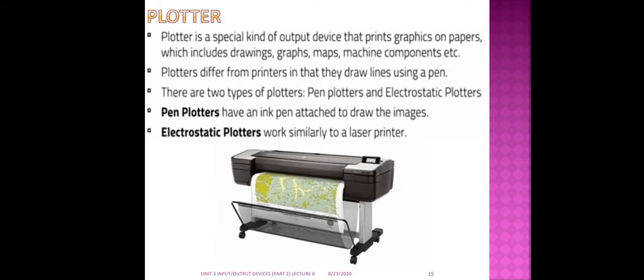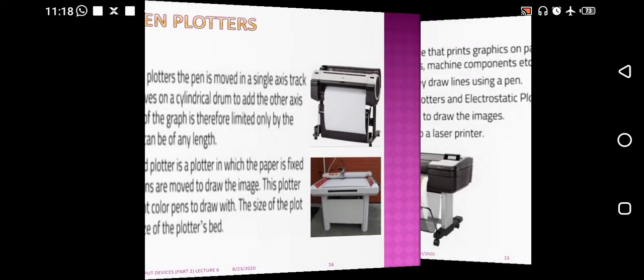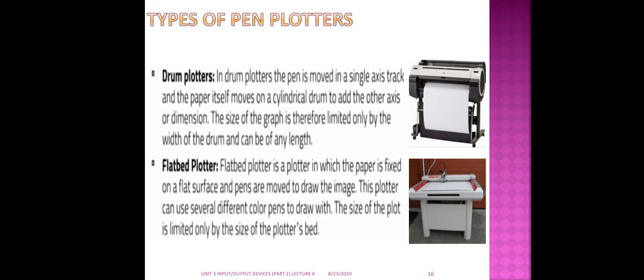Here you see the difference between impact and non-impact printers on the screen. We also have the plotter, which is a special kind of output device. The difference between a plotter and a printer is that a plotter gives graphics on paper — drawings, graphs, maps, machine components — and draws lines using a pen, while a printer gives ordinary output. There are two types of plotters: pen plotters and electrostatic plotters. Pen plotters are of two types: drum plotters and flatbed plotters. In a drum plotter, the pen moves on a single axis and the paper moves on a cylindrical drum, while in a flatbed plotter the paper is fixed on a flat surface and the pen moves to draw the image.